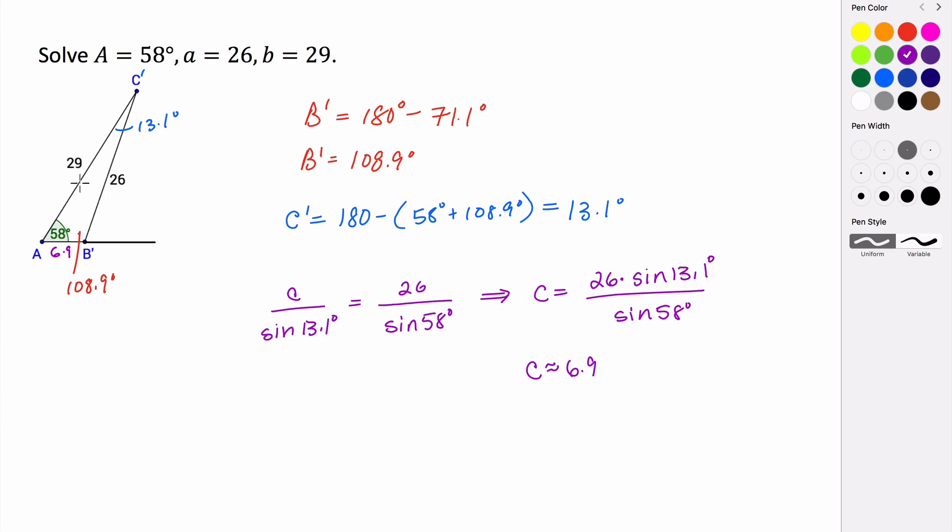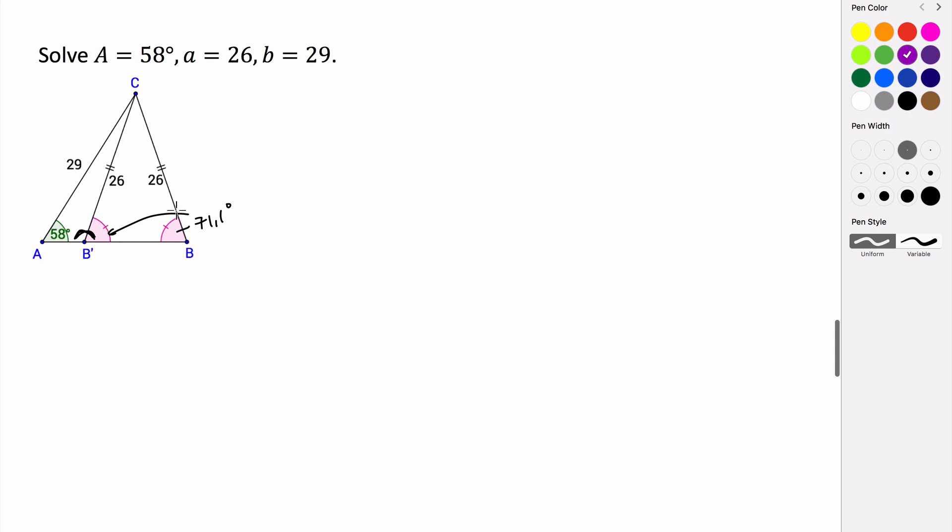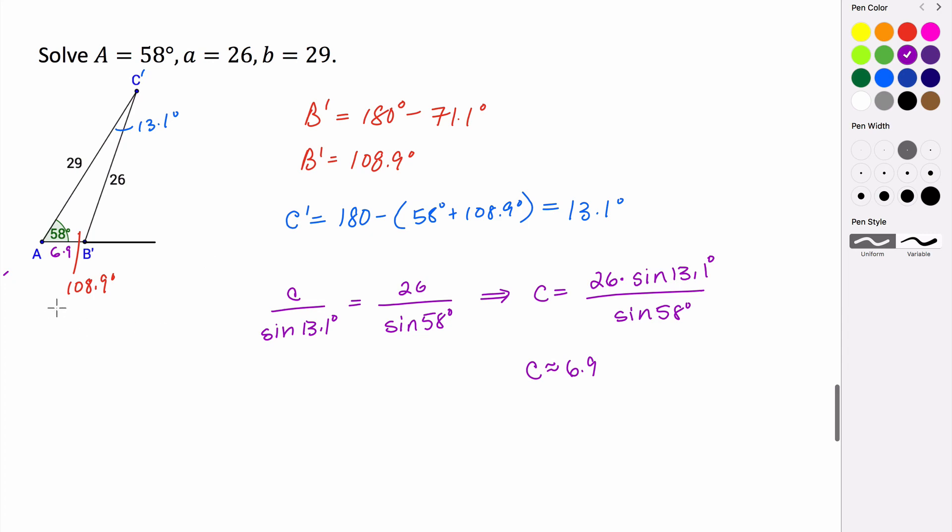And that would be how you would find the measures of our second triangle. Really it's not much more work, we just have to use the law of sines once again. But the way that we get this measure of 108.9 was using the fact that when this side BC swings over, it's creating this isosceles triangle. So these base angles are congruent, meaning that these two are supplementary. And that's how we use the information from our first triangle to help us solve our second triangle.